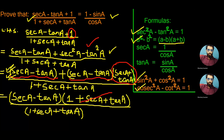The denominator 1 plus sec a plus tan a is common with the expression in the bracket of the numerator, so we cancel them. There remains only sec a minus tan a.